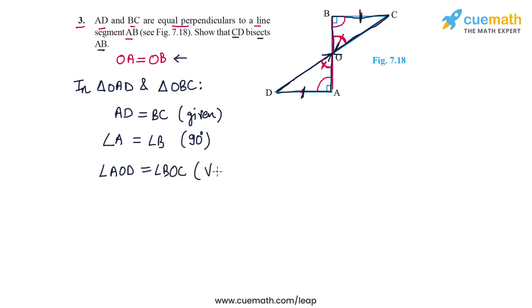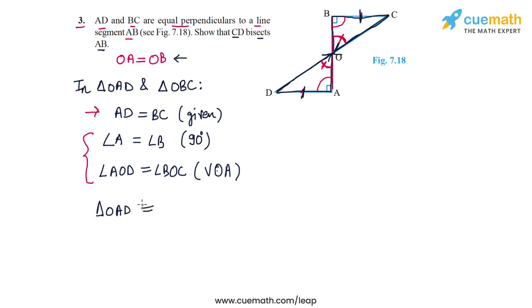Now we have one side pair and two angle pairs equal, so we can claim the two triangles are congruent. The criterion we apply is the AAS congruence criterion, which is actually equivalent to the ASA congruence criterion. We write AAS because the side pair does not fall between the two angles.